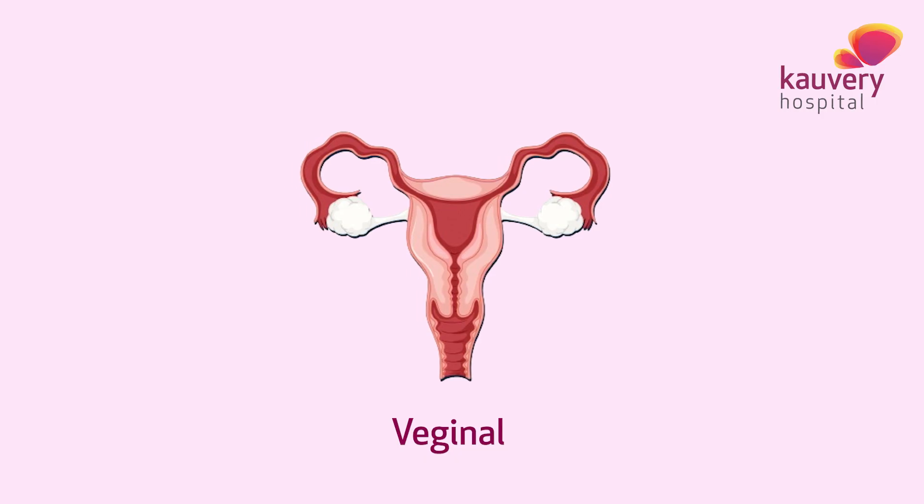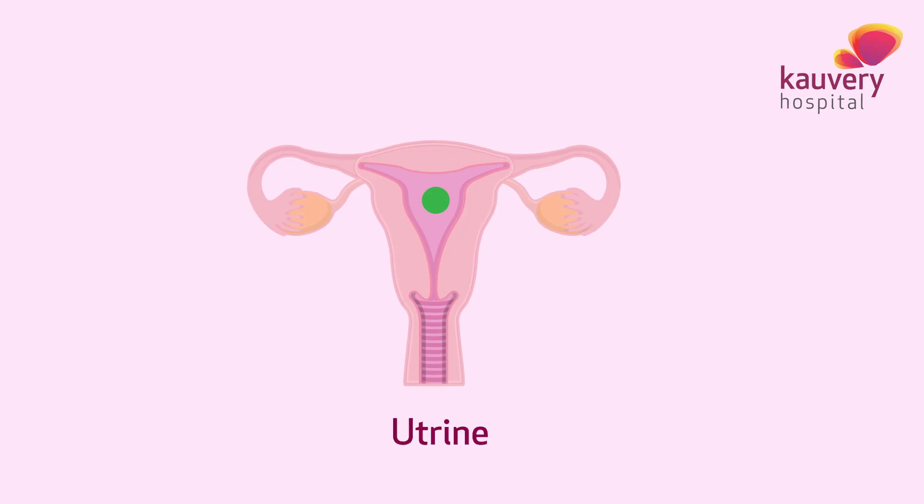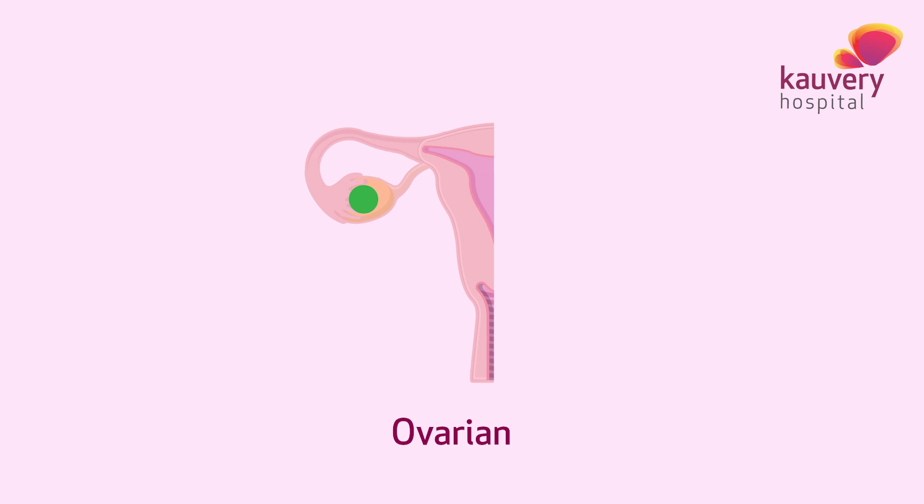In female infertility, there may be vaginal or cervical factors, uterine factors, tubal factors, ovarian factors, or tubo-peritoneal factors.